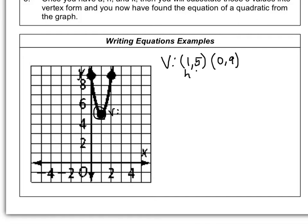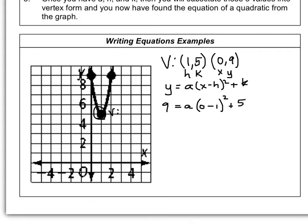So the vertex (1, 5) goes in for h and k, and the point (0, 9) goes in for x and y into the basic vertex form of a quadratic. Substituting: y is 9, I don't know a, times the quantity x is 0 minus h is 1, squared, plus 5. So 0 minus 1 is negative 1, giving 9 equals a times negative 1 squared plus 5. Negative 1 squared is positive 1, so 9 equals a plus 5. Subtracting 5, a equals 4.